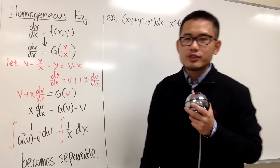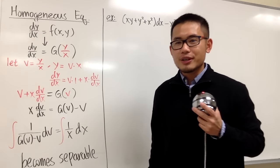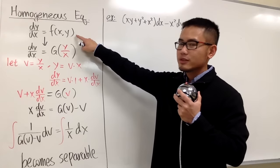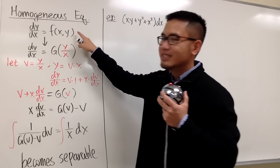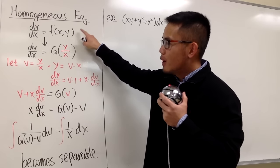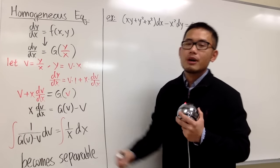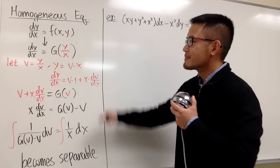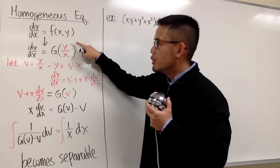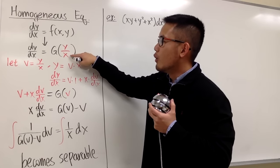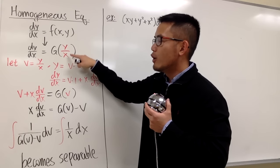Let's talk about homogeneous equations — this is all about how to solve a differential equation by using a substitution. This is the form we want to start with: isolate dy/dx on one side and put everything else on the other. Suppose this is not linear, not exact, and not separable. Then try your best to write this into an expression in terms of y over x, which we will call g of y/x.